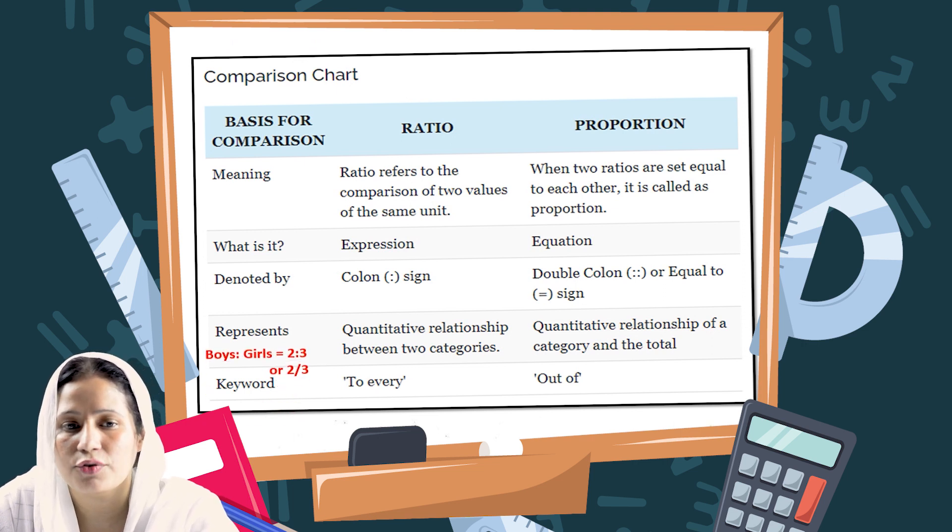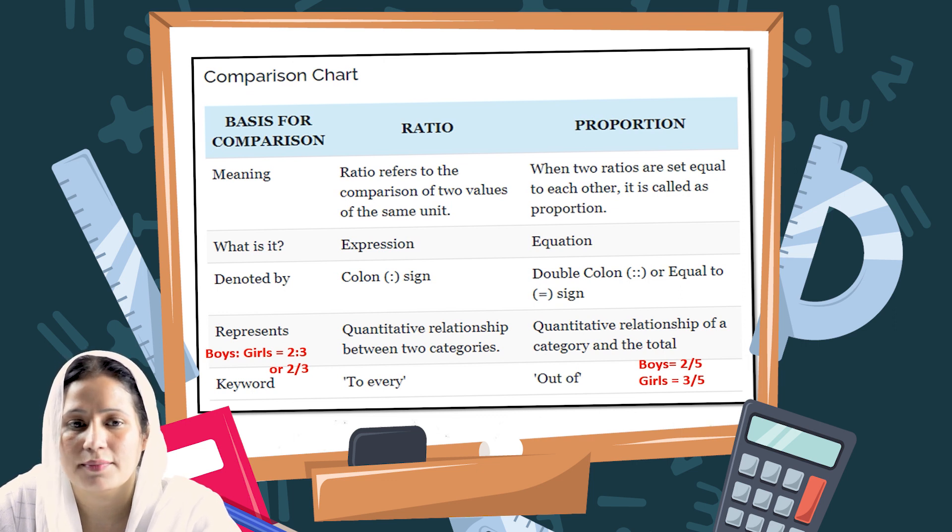Ratio of the boys to girls is 2 ratio 3 or 2 by 3. Then the proportion of the boys will be 2 by 5, or for girls, the proportion of the girls will be 3 by 5, meaning out of total strength. You can easily identify the problem of ratio and proportion by identifying the keywords.